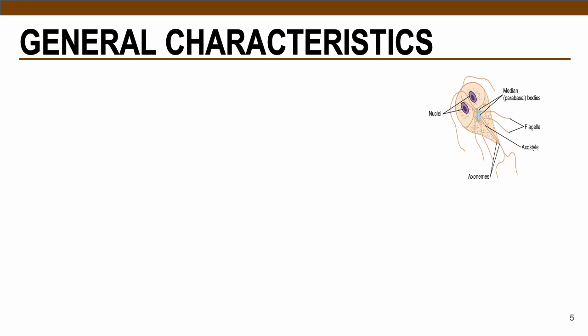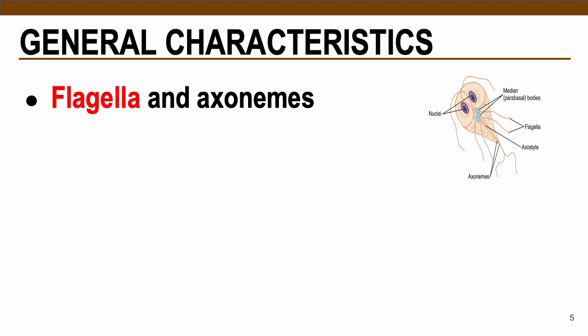Here are the general characteristics of your flagellates. Flagellates are types of protozoans that possess a whip-like locomotory organelle called flagella. Together with your axoneme and axostyle, this structure helps the parasite to move from one place to another, specifically the pathogenic ones. The kinetoplast is also a structure which helps in energizing the parasite — this is a neuromotor apparatus, much like the brain of humans.